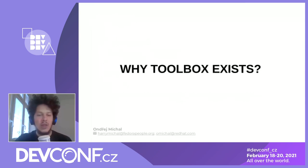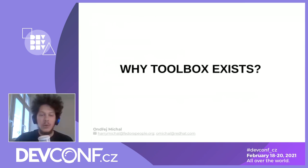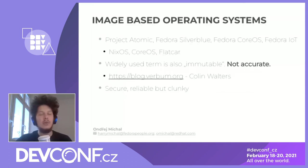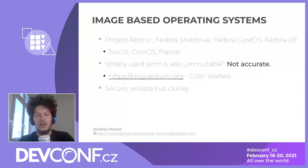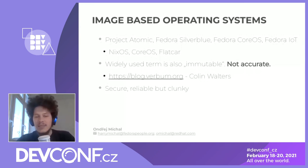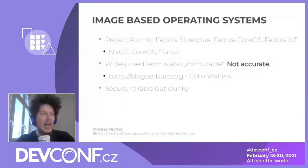The first thing we should ask ourselves is: why does Toolbox exist? There are many tools out in the wild, so why is there yet another one? Maybe you've heard of image-based operating systems. Maybe Project Atomic rings a bell, or you've heard of systems like Fedora Silverblue, CoreOS, IoT, NixOS, or its fork Flatcar. These systems are quite different from classic operating systems, and we could describe them as immutable — though that's not exactly accurate.